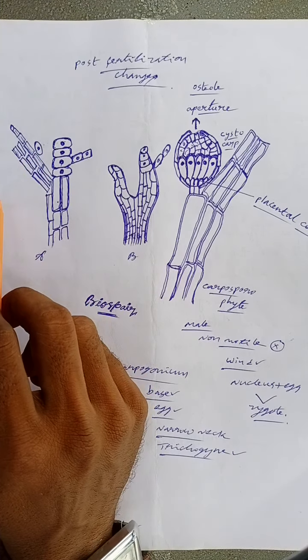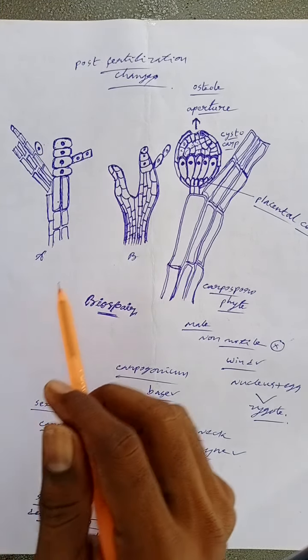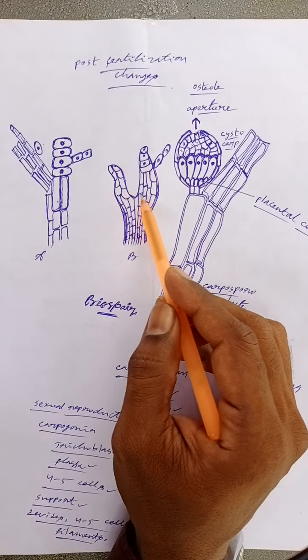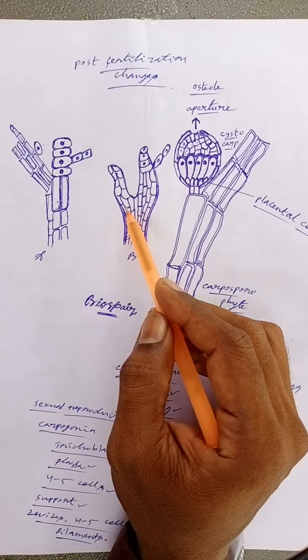A tubular connection is established between auxiliary cell and carpogonium base. The diploid zygote divides mitotically into two daughter nuclei.